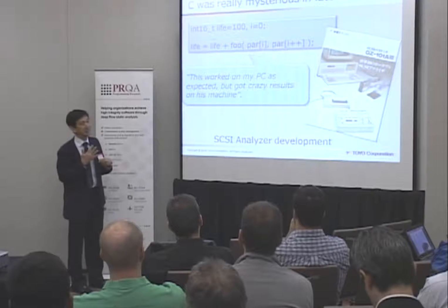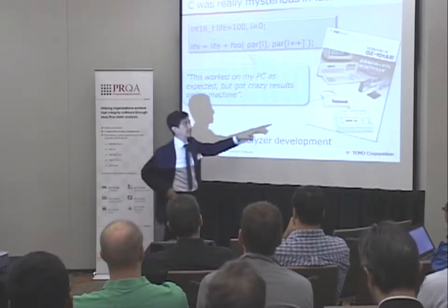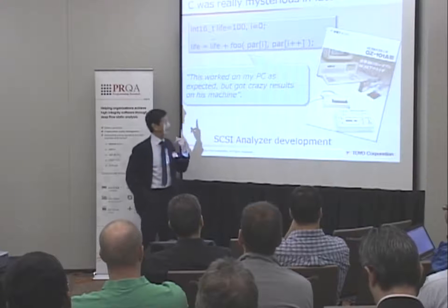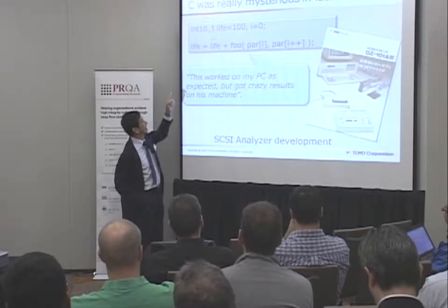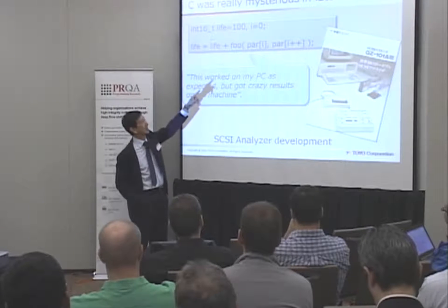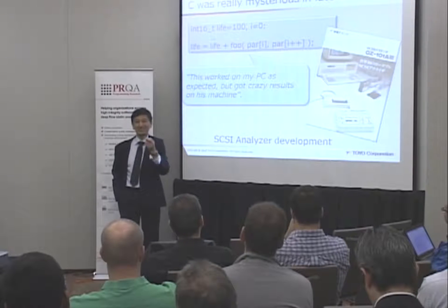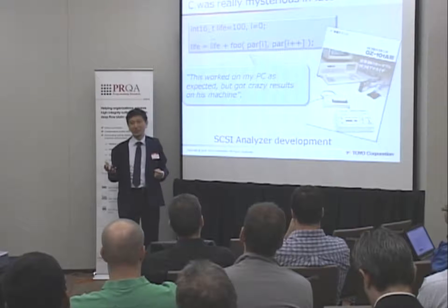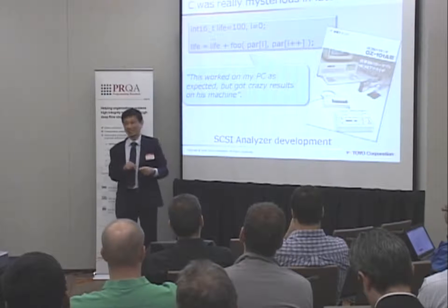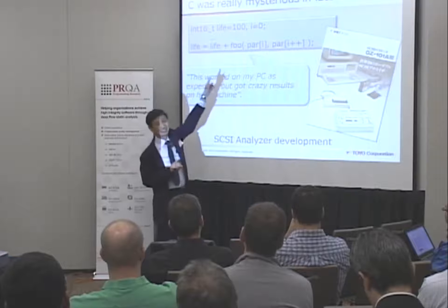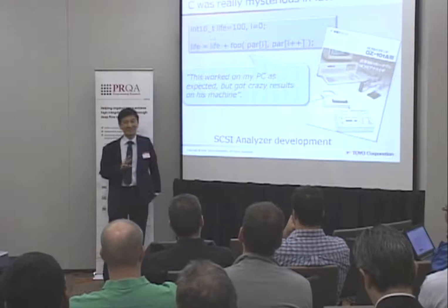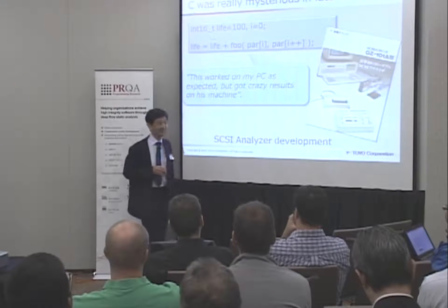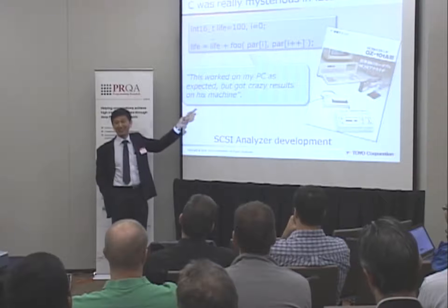When I was a development guy working on things like a SCSI bus analyzer in the early 90s or late 80s, I wrote that type of code in C — life equals life plus two, with parameter par[i] and par[i++]. And I'm sure everybody here understands that depending on the compilation option or which manufacturer's compiler is used, the life value is changed. Evaluation order is not defined at all by C. But when I was young, I didn't know that kind of thing at all.